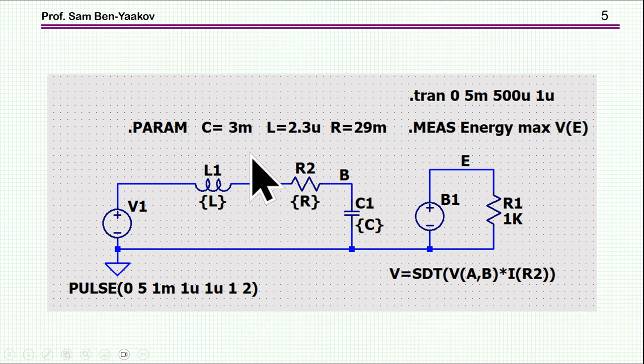I've chosen here values which were taken from a practical circuit, a commercial unit. We have a capacitance of 3 millifarads—the input bus capacitance approximately. We have the inductance, typical for a cable, 2.3 microhenries.